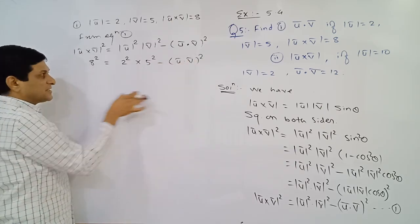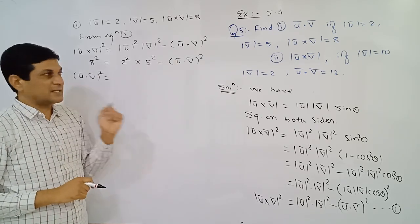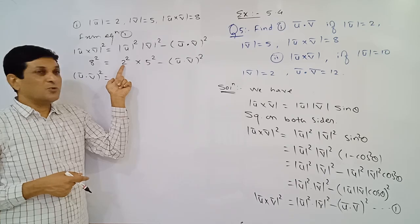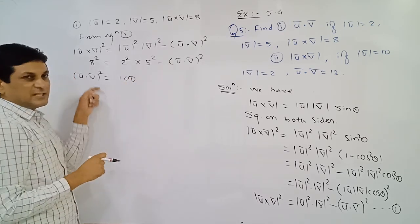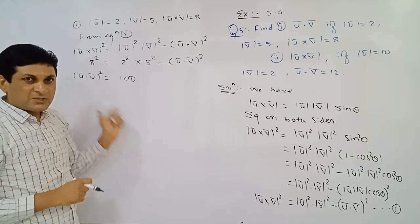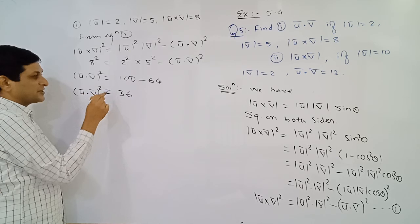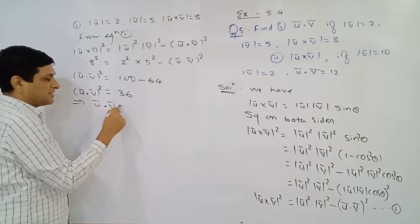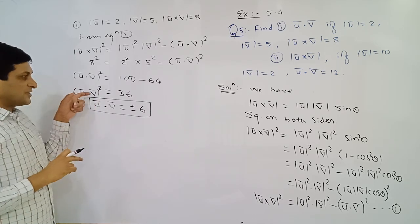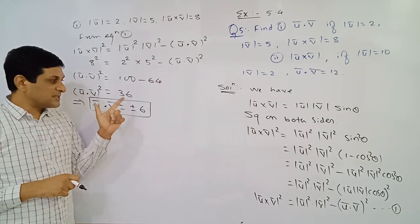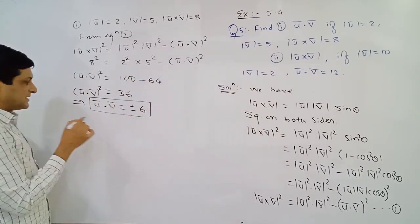Rearranging, square of (u·v) equals 2 squared times 5 squared minus 8 squared. That is 4 times 25 minus 64, which equals 100 minus 64 = 36. So (u·v)² = 36, which implies u·v equals plus or minus 6. Taking the square root on both sides, square root of 36 is plus 6 or minus 6. That is the answer to the first example.